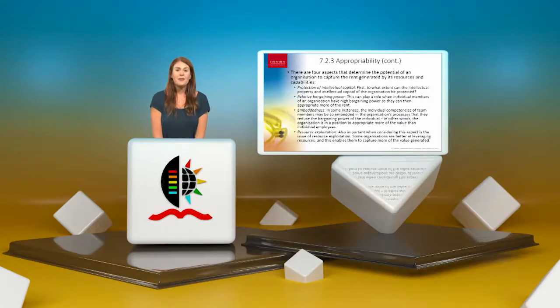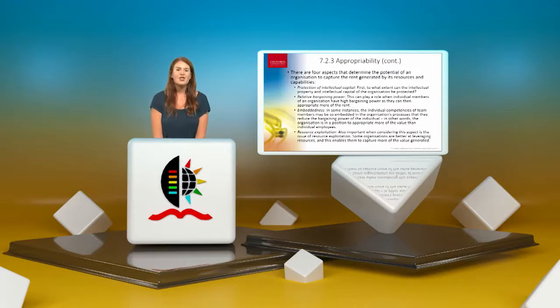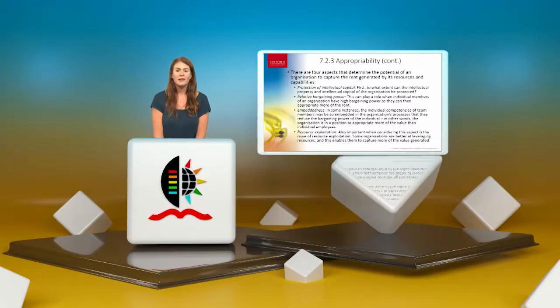There are four aspects that determine an organization's potential to capture rent generated by resources: protection of IP and intellectual capital — who thought out that bright idea and who's protecting it; relative bargaining power of individual members; embeddedness — where individual competencies are so embedded in organizational processes that they reduce the individual's bargaining power, allowing the organization to appropriate more value; and lastly, resource exploitation — some organizations are simply better at leveraging resources and capture more of the value generated.